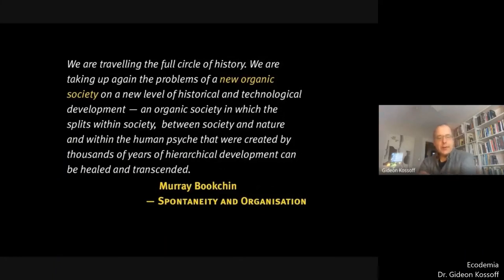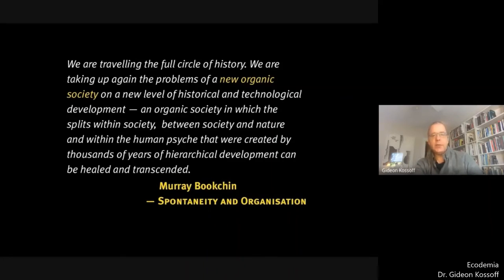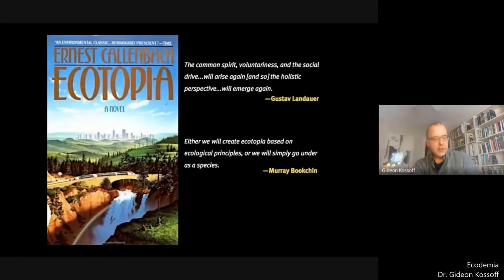Murray Bookchin's historical narrative was based on the argument that hierarchies of all kinds have destroyed organic communities and organic social forms. He argued that we must recover a new form of organic society — a society based on ecological principles, a new organic society on a new level of historical and technological development — an organic society in which the splits within society, between society and nature, and within the human psyche, created by thousands of years of hierarchical development, can be healed and transcended. And he continues: either we will create ecotopia based on ecological principles, or we will simply go under as a species.